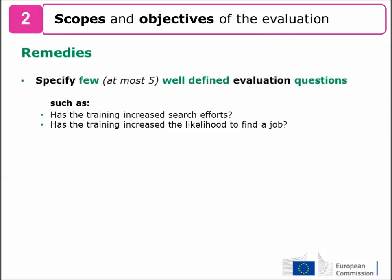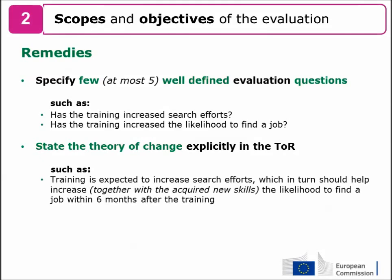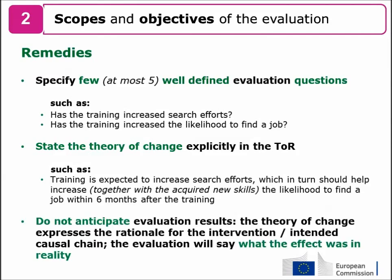To address these risks, specify a few — at most five — well-defined evaluation questions, such as: has the training increased search efforts, and has the training increased the likelihood of finding a job? Then state the theory of change explicitly in the terms of reference. For instance, the training is expected to increase search efforts, which in turn should help increase the likelihood of finding a job within six months after the training. Base yourself on the objectives of the policy or the intervention itself. Finally, do not anticipate evaluation results — the theory of change expresses the intended causal chain, while the evaluation will say what the effect was in reality.